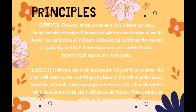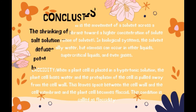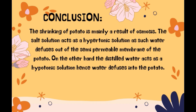This leaves space between the cell wall and the cell membrane, and the plant cell becomes flaccid — a condition called flaccidity. We can conclude that the shrinking of the potato is mainly a result of osmosis. The salt solution acts as a hypertonic solution, so water diffuses out of the semi-permeable membrane of the potato. On the other hand, distilled water acts as a hypotonic solution, so water diffuses into the potato.